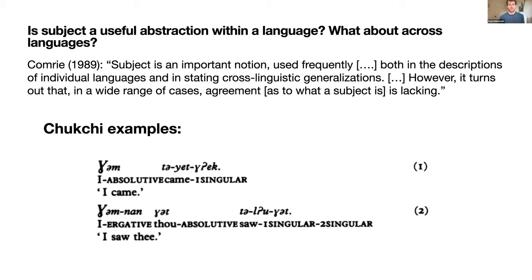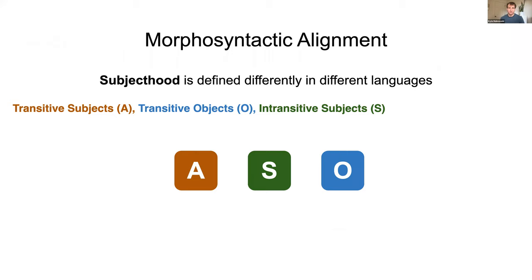He gives an example of a classic ergative case in Chukchi: in 'I came,' where I is used as an intransitive, it has absolutive case. In 'I saw thee,' where I is the transitive subject, it has the different ergative case marking. The second person pronoun 'thee' gets the absolutive marking. This is the classic ergative construction where the intransitive subject is marked the same as the transitive object.